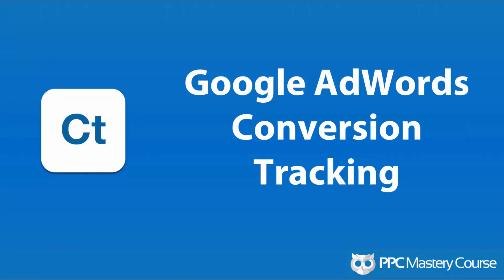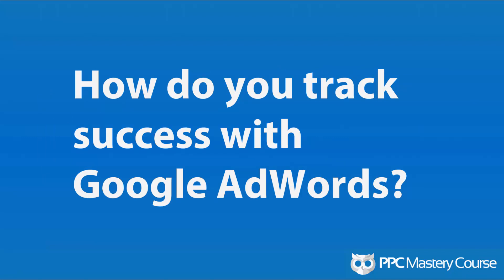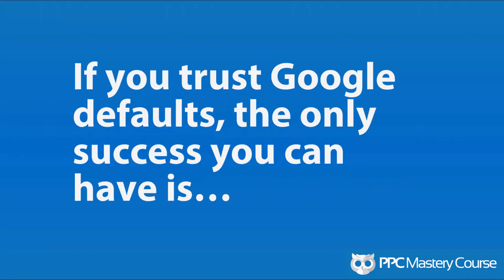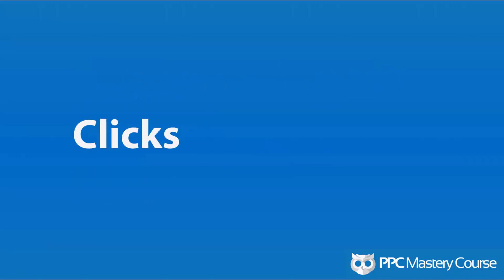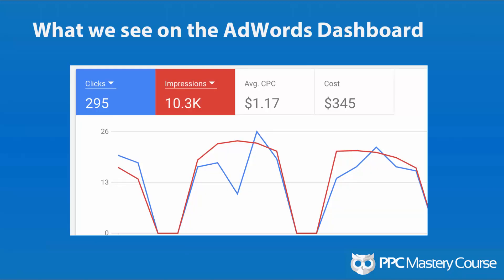Let's talk about Google AdWords conversion tracking. We are going to answer the question: how do you track success with Google AdWords? Before we get into the actual tracking of conversions, I just want to make a statement. If you trust Google's defaults, the only success they're going to show you is the number of impressions you get and the number of clicks that you receive on your ads. When we log into the new Google AdWords dashboard, we can see they focus on clicks and impressions. There's no mention of conversion to be found. But obviously you're watching this video because you're interested in conversions, so we realize there's a deeper tracking need.